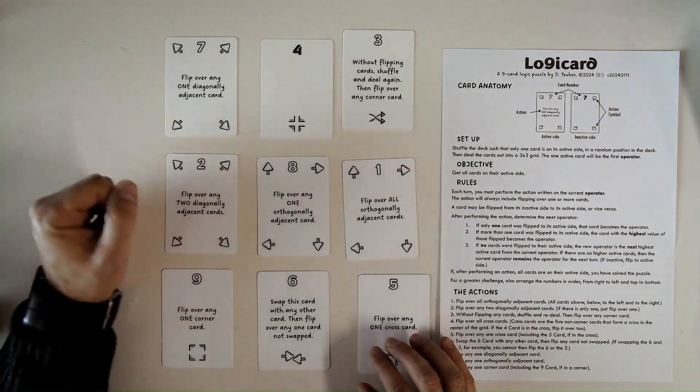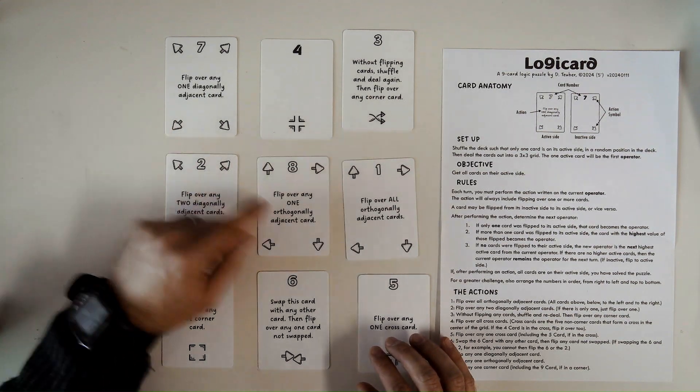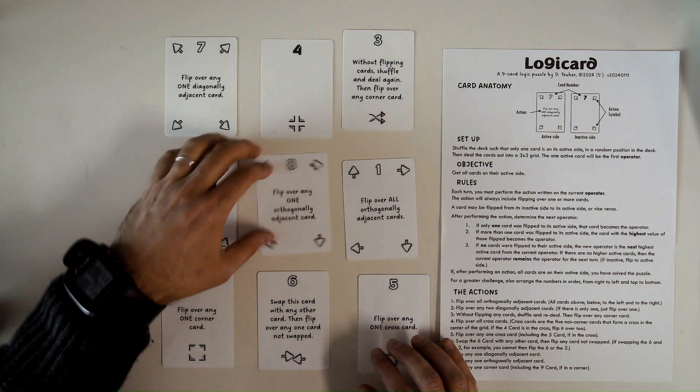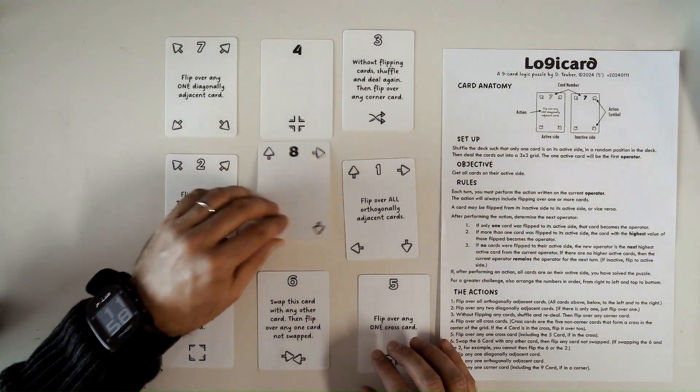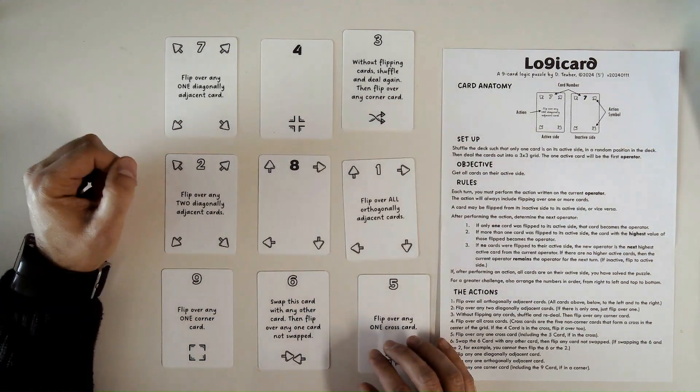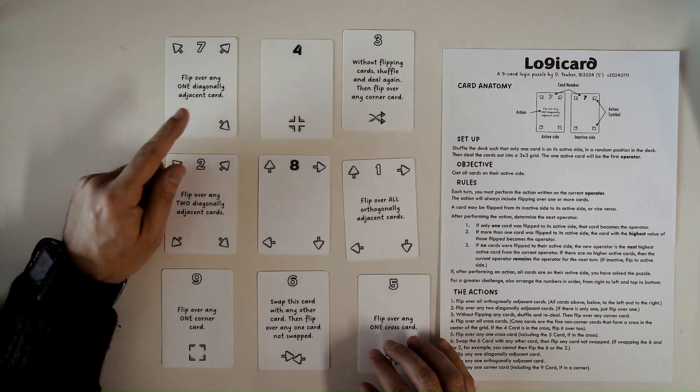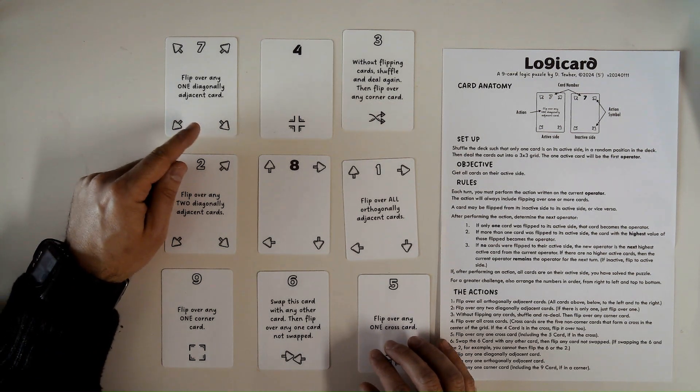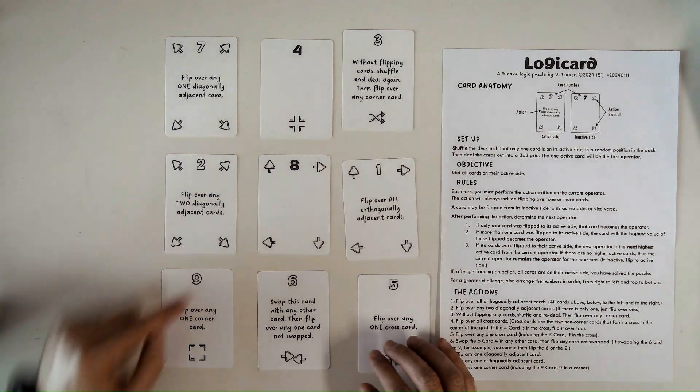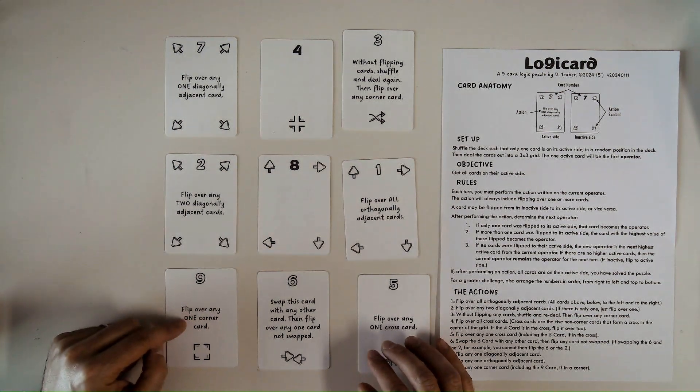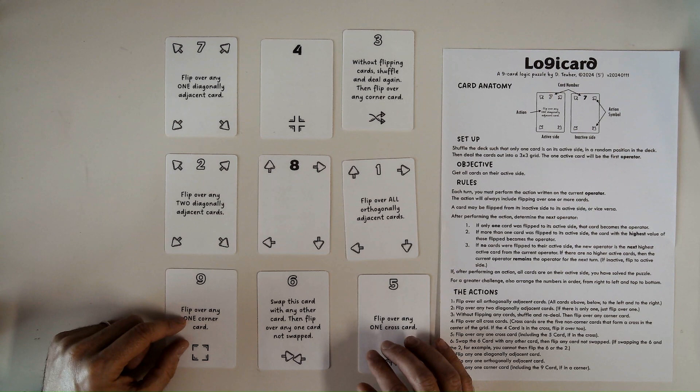The 7 hasn't been swapped on that turn. So I can flip that. And it says flip over any one diagonally adjacent card. The only choice is this 8. I'm flipping that down. So the next operator will be any active card that's higher than the 7. In this case, it would be the 9.